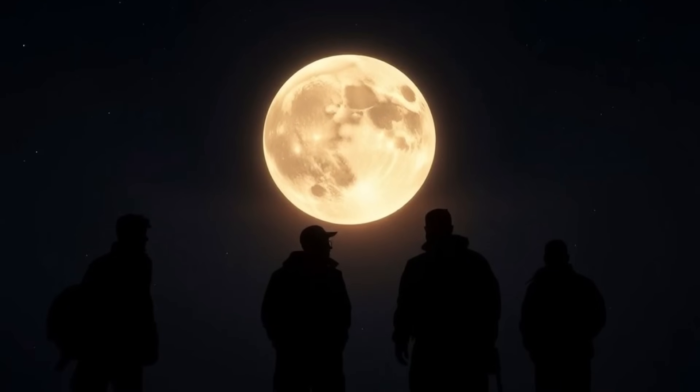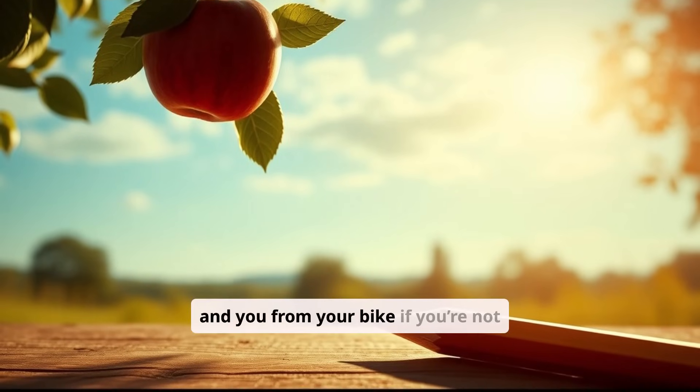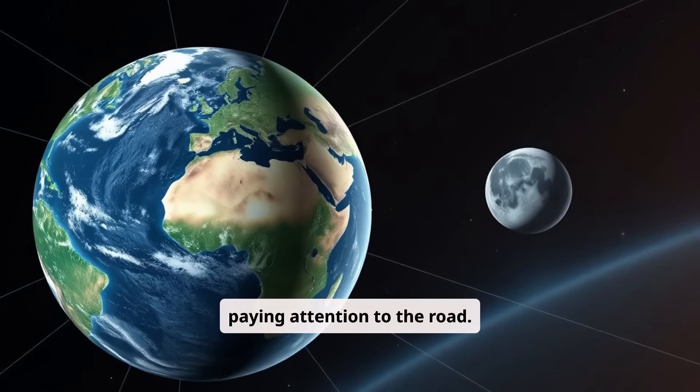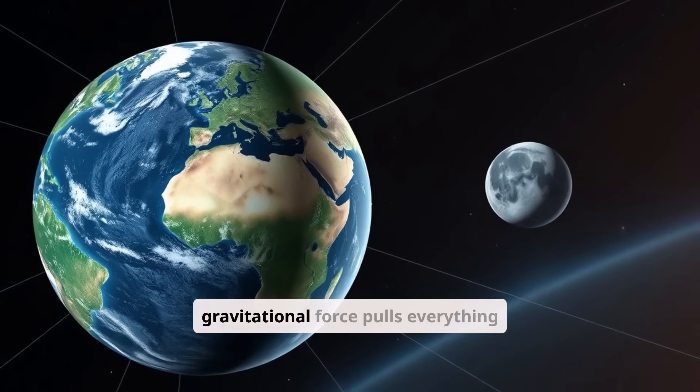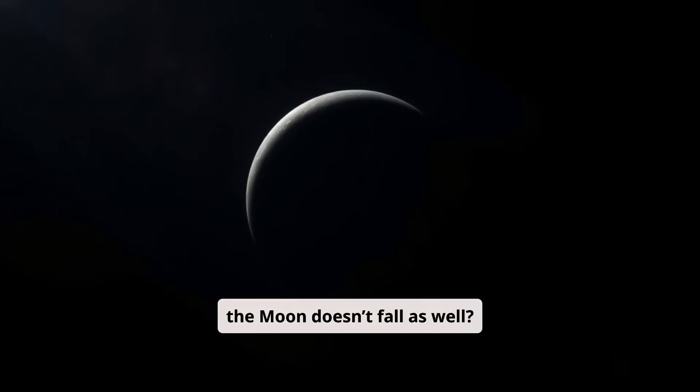Can the moon fall to earth? An apple falls from a tree, a pencil from a table, and you from your bike if you're not paying attention to the road. So if earth's powerful gravitational force pulls everything toward it, how is it possible that the moon doesn't fall as well? And could it ever happen?